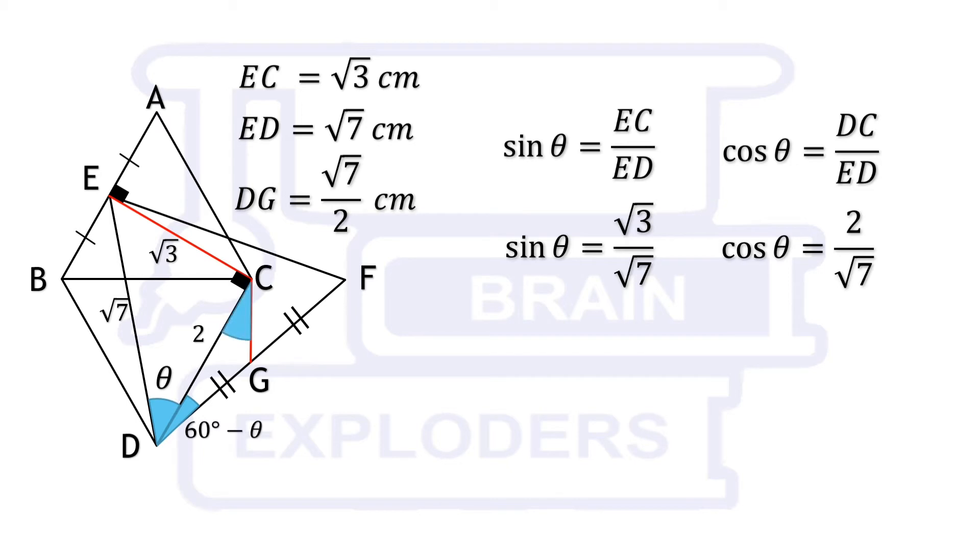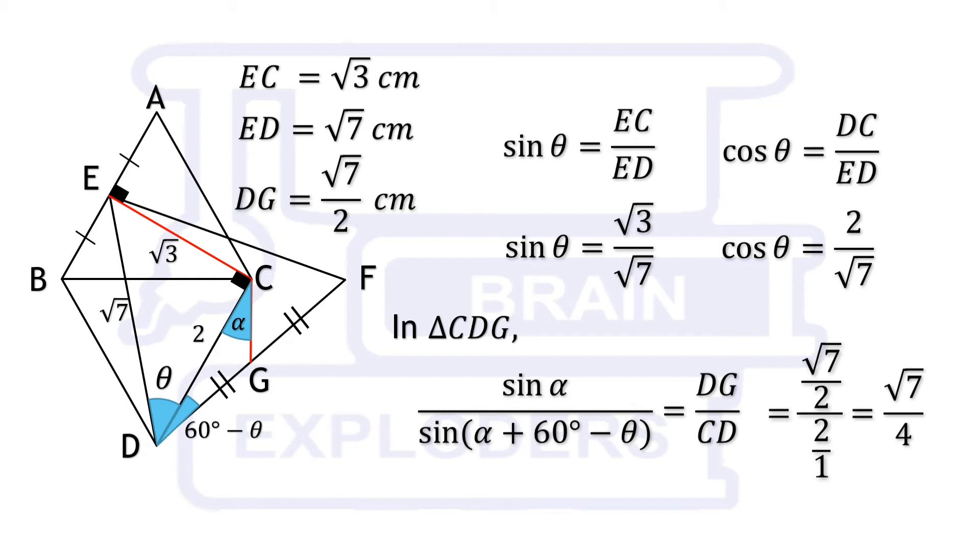Now apply the relation which was discussed in the starting of the problem. In triangle CDG in place of sin G we can use sin(alpha + 60° - theta). Put the values of DG and CD in this expression.